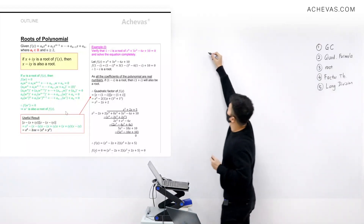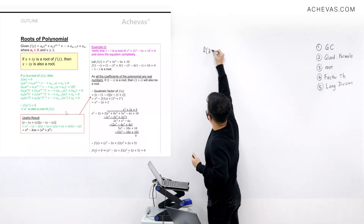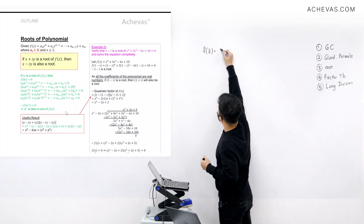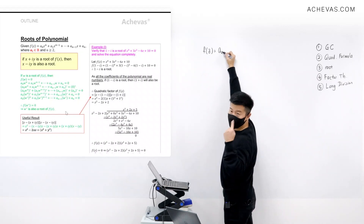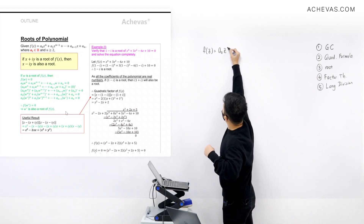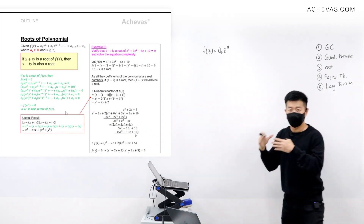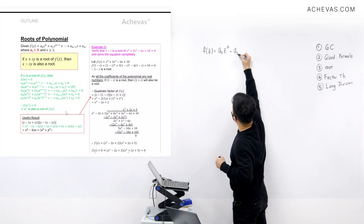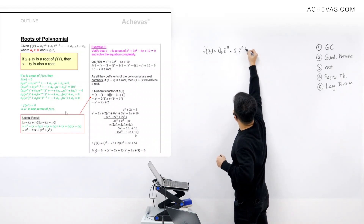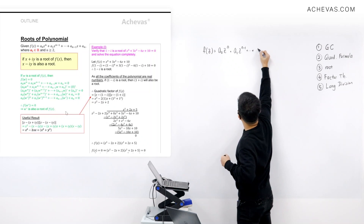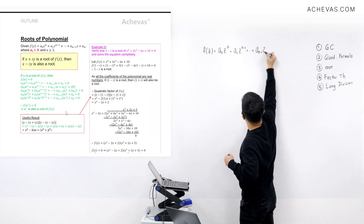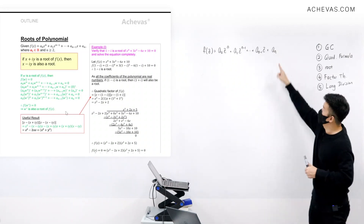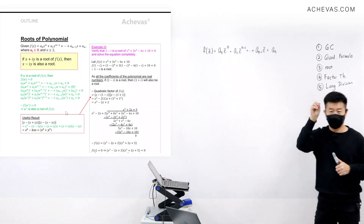I want to look at a polynomial in general, which I'm going to call f(z). A polynomial in general looks like this: the coefficient of the first term is a0, then the variable to the power of n — so this is a polynomial with order n. The next term is a1 times z to the power of n minus 1, all the way until the second last term, which is a_{n-1} times z, and the very last term is a_n, which is independent of z — that is, a_n times z to the power of 0.